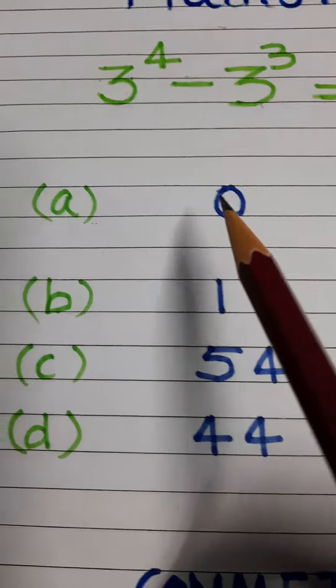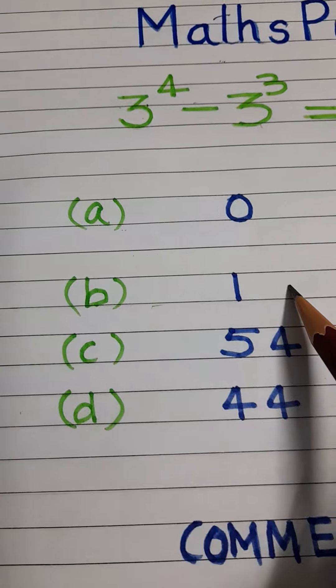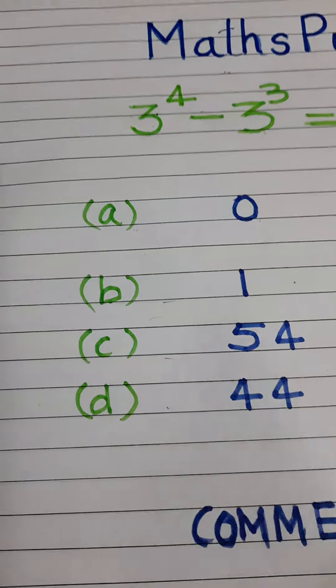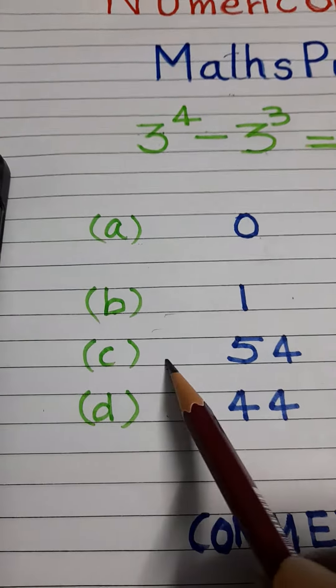The options are given: a is equal to 0, b is equal to 1, c is equal to 54, and d is equal to 44.